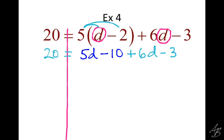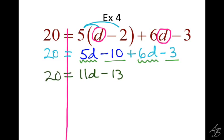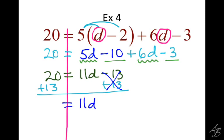Every time we do something, we get a new equation. After we distribute, we combine like terms. We have the 5d and the 6d as like terms, and the minus 10 and minus 3 are also like terms. 5d plus 6d is 11d, and negative 10 minus 3 is negative 13. On the other side we still have 20. Then we get rid of the minus 13 by adding 13 on both sides. The 13s cancel leaving 11d, and 20 plus 13 is 33. Then divide by 11 — the 11s cancel and we get d equals 3.